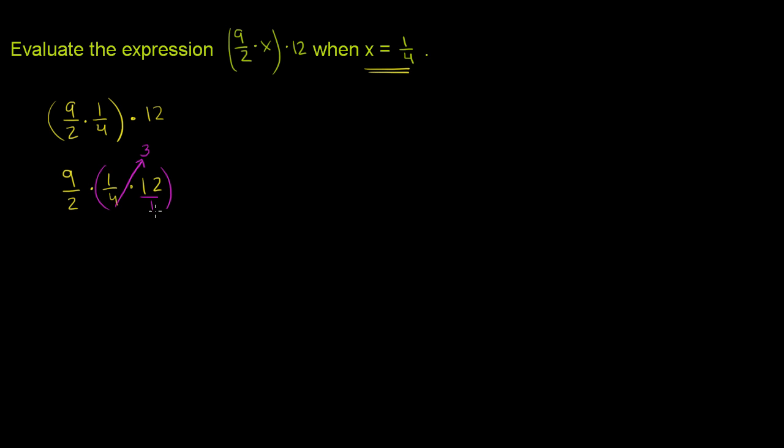And so that simplified things a good bit. Now the whole thing becomes 9 halves times 3, or 9 halves times 3 over 1, which is going to be equal to 27 over 2. If we wanted to write that as a mixed number, it's an improper fraction right now. This would be 2 goes into 27 thirteen times with a remainder 1. So it'll be 13 and 1 half.